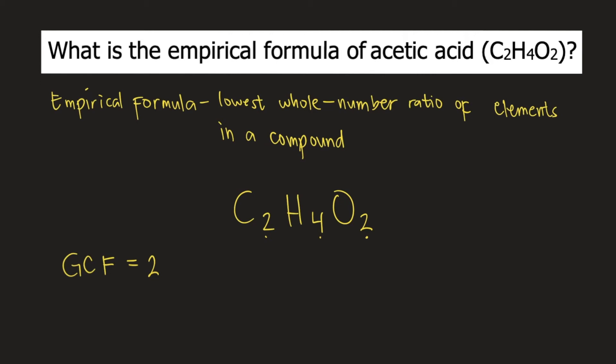So, you will divide all the subscripts by the Greatest Common Factor. So, C2H4O2 becomes C1H2O1.